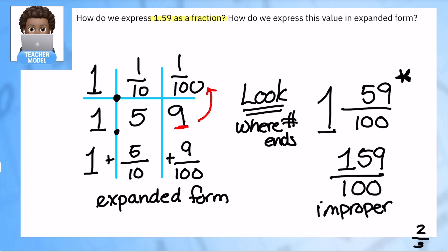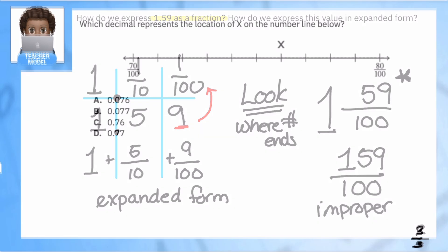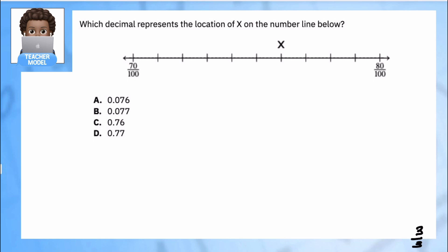We have one more example to go. Which decimal represents the location of X on the number line below? Now just looking at my number line, I can see that it has fractional values to the hundreds place, so I'm automatically gonna assume and make a prediction that my number is also gonna be in the hundreds place. So let's figure out where this is, and here I have 70 and I'm going to 80.